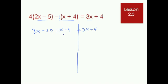All right, let's simplify what we have on the left side first. 8x minus x is 7x, and negative 20 minus 4 is negative 24. So now we can simplify that even more to 7x minus 24 equals 3x plus 4.